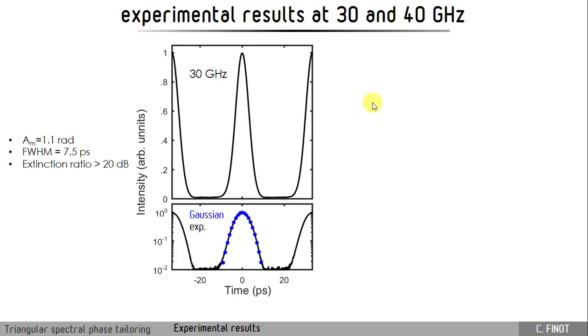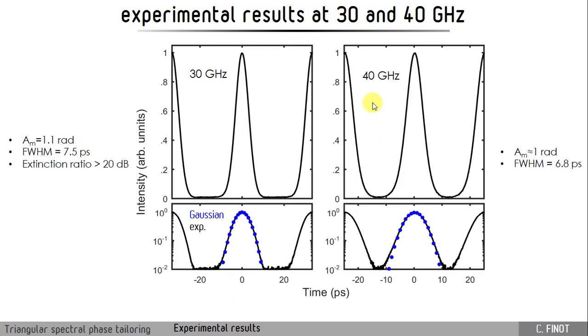We can still increase the repetition rate. Here, results obtained at 30 GHz. We still have very nice results that are closely in line with Gaussian fits. And at 40, we still achieve a very nice extinction ratio. And we generate pulses that are shorter than 7 picoseconds.